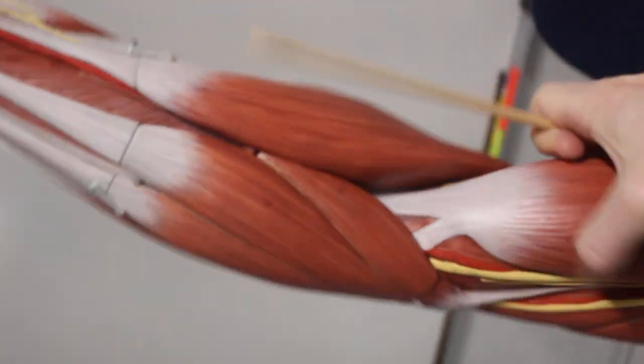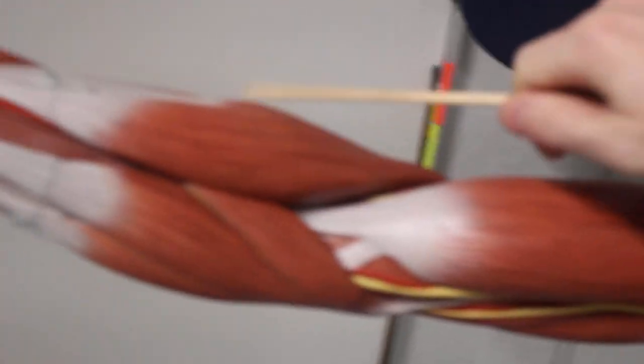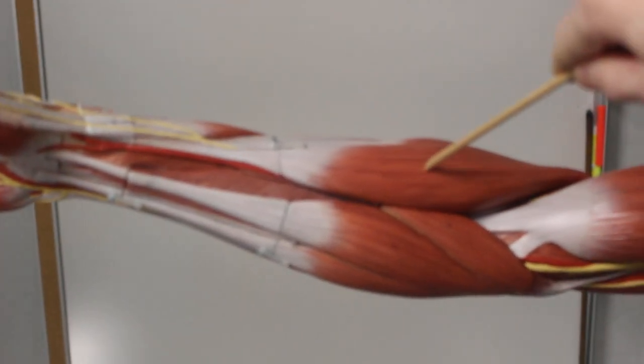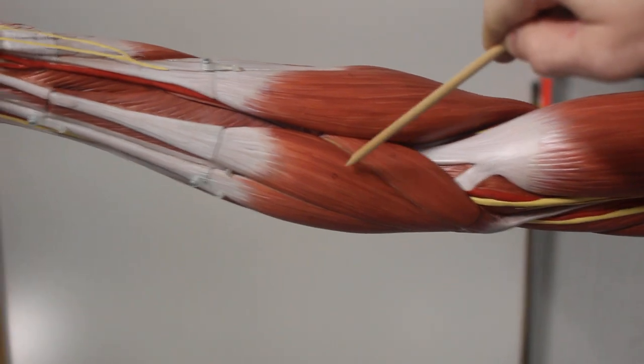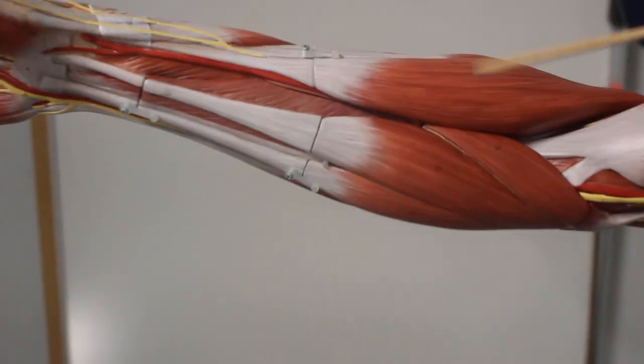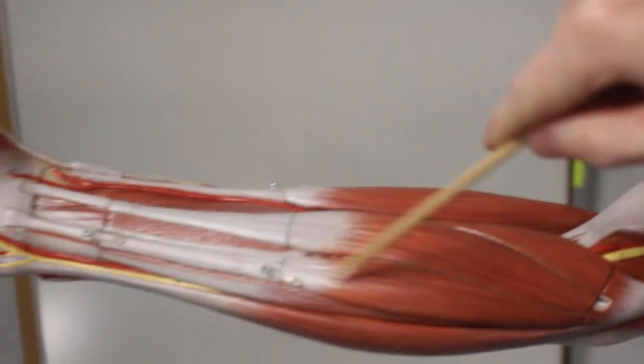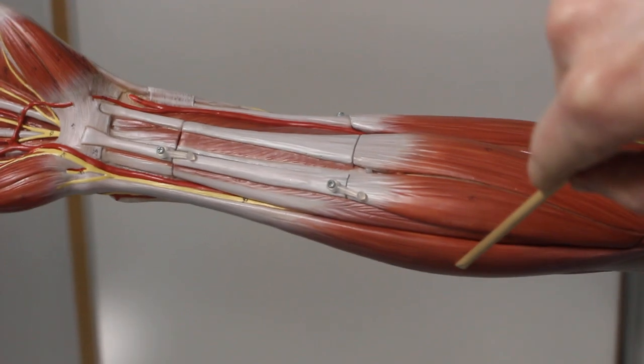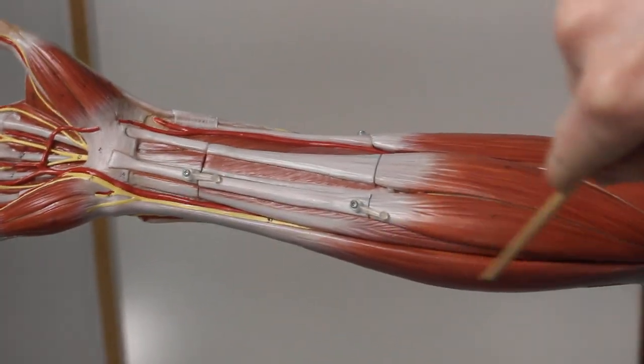All right, moving up to the forearm, this muscle right here, going to the thumb direction, is brachioradialis, pronator teres, flexor carpi radialis, going toward the thumb, palmaris longus, going toward the palm of the hand, flexor carpi ulnaris, going toward the pinky.